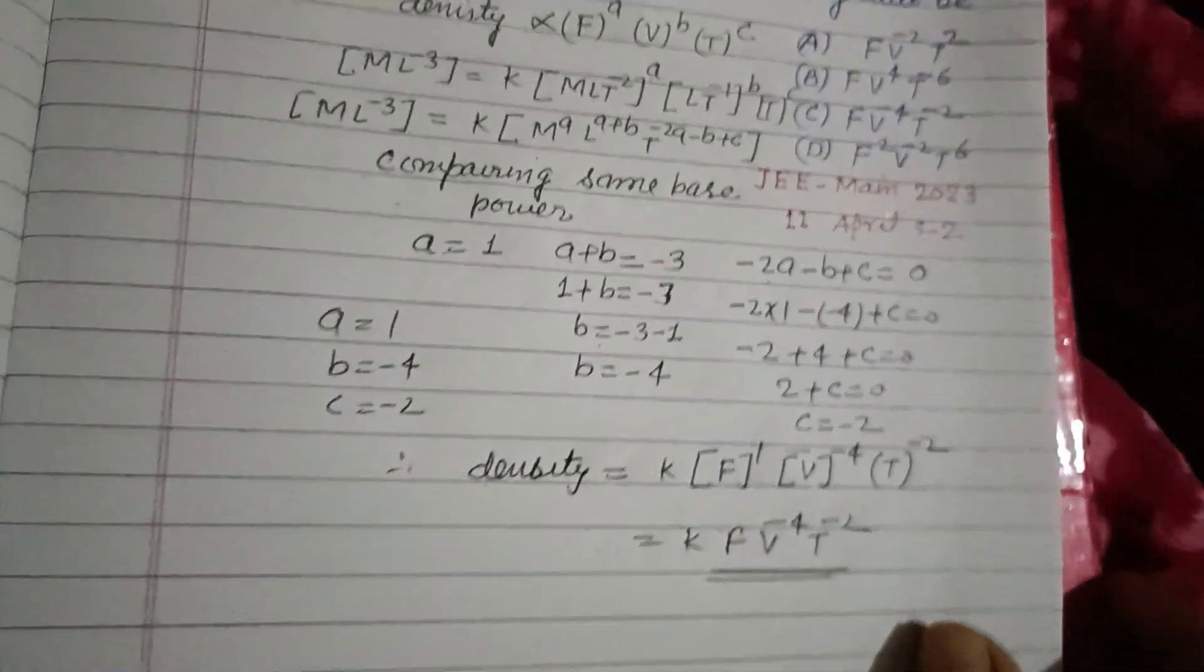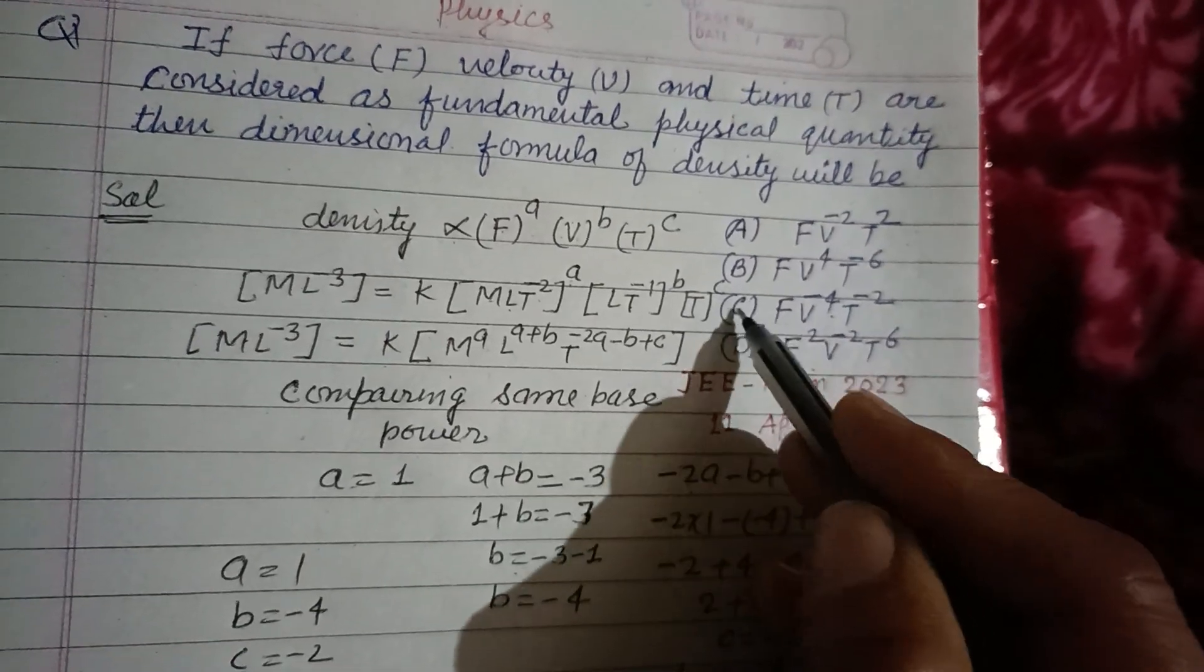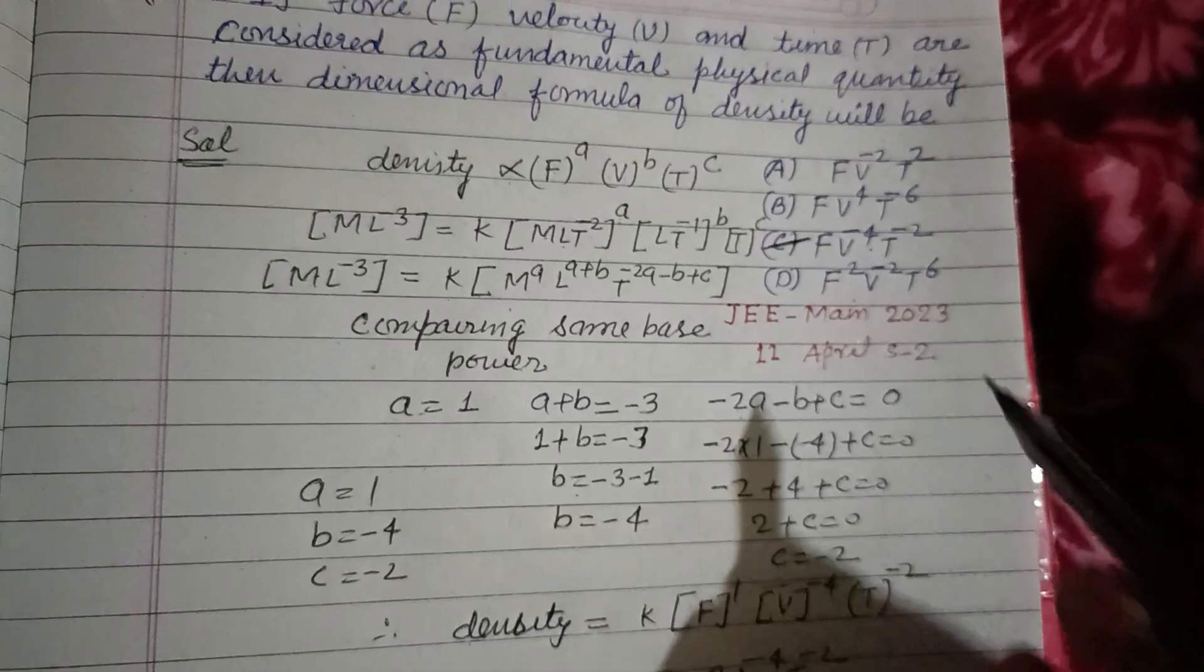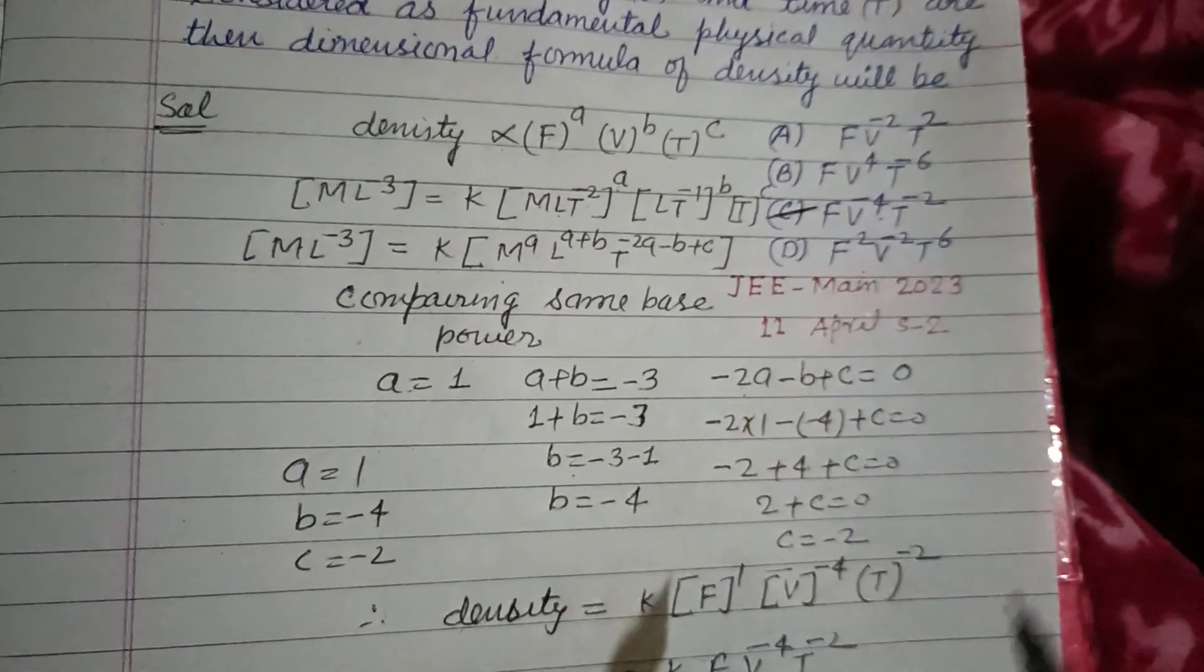So this is the relation. And FV^-4 T^-2 is the correct answer. So dimension of density in these fundamental quantities is FV^-4 T^-2.